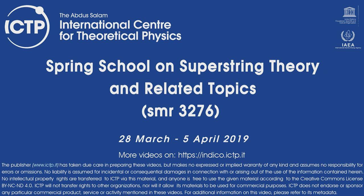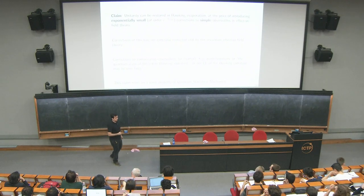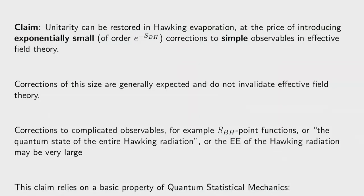The radiation emitted by a black hole — Hawking found that the radiation is thermal. We want to investigate the possibility that small corrections to Hawking's computation can restore unitarity. The claim is that exponentially small corrections to simple observables are sufficient to restore unitarity, and we're about to argue why this is a very general property of statistical systems with many degrees of freedom.